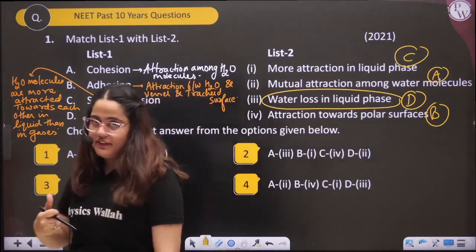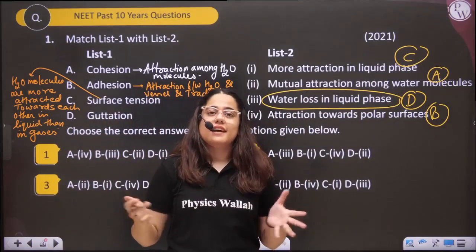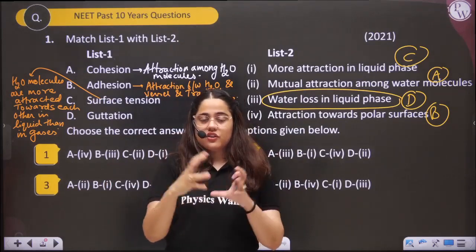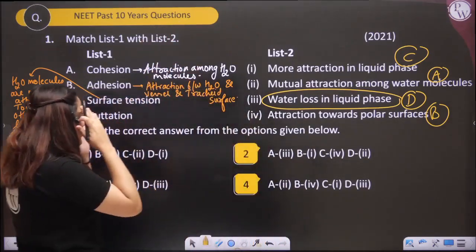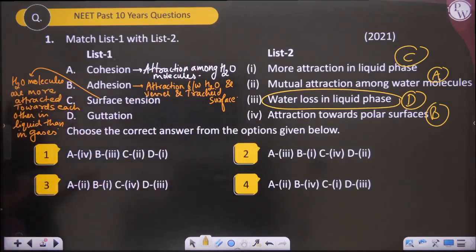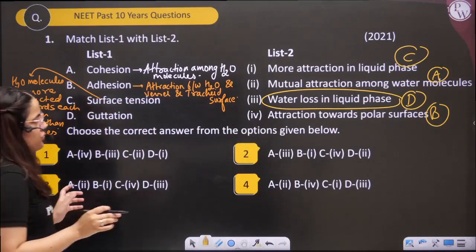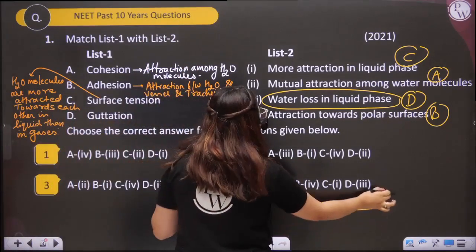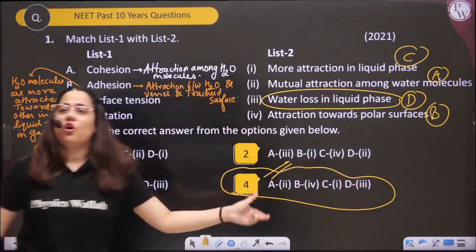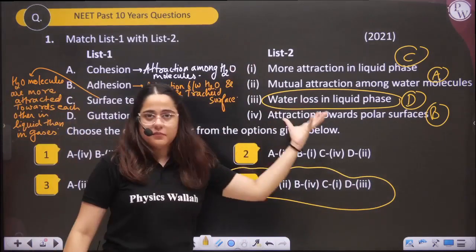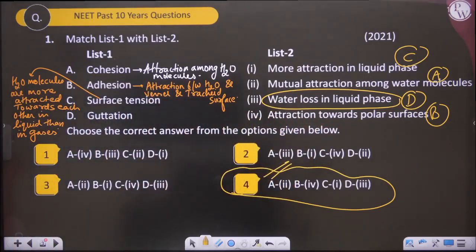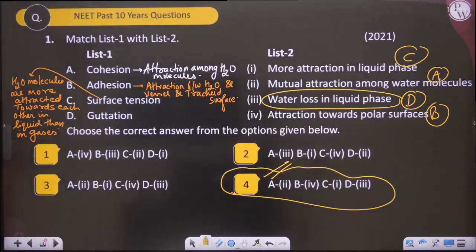Because of cohesion, adhesion, and surface tension, water molecules have very high tensile strength so their attraction cannot be broken by any forces. They will be pulled towards the upper surface of the plant. The answer here: A matches with second, B with fourth, C with first, and D with third. So option number four is correct. Very direct question — I hope this is clear to all of you.